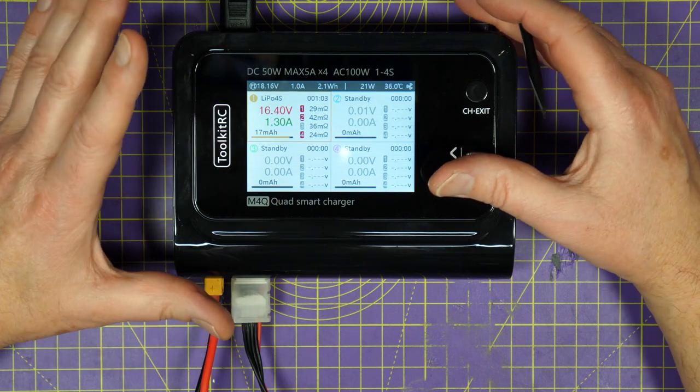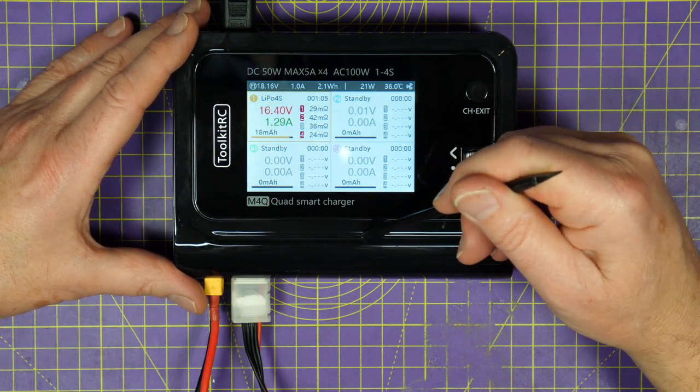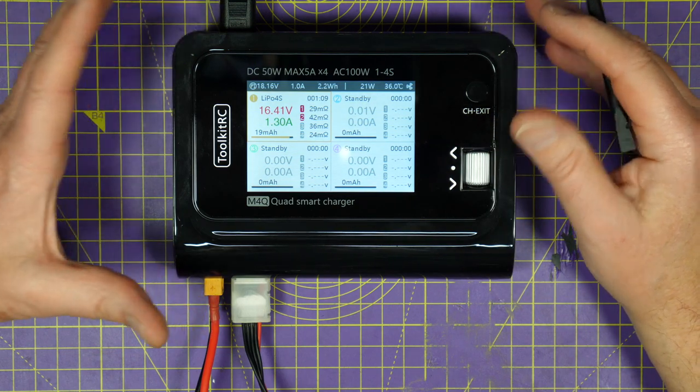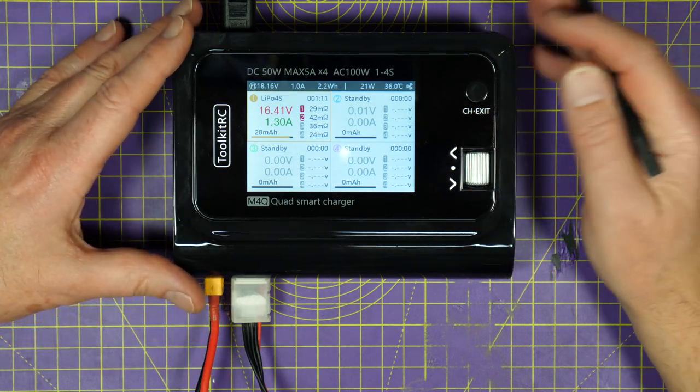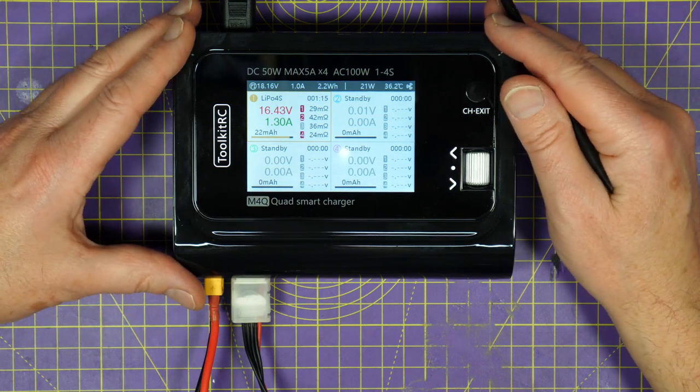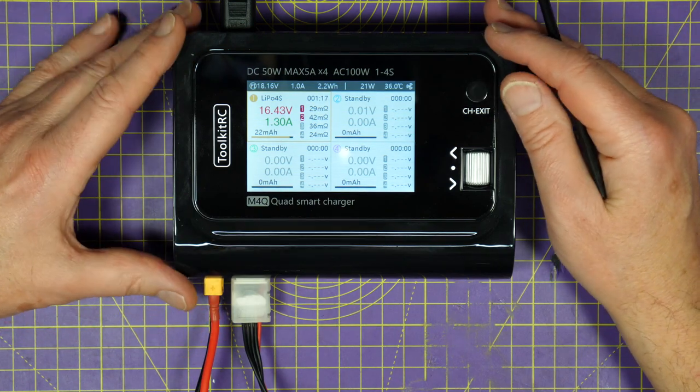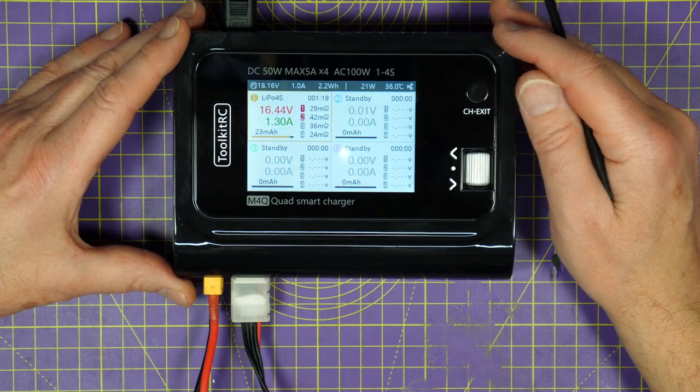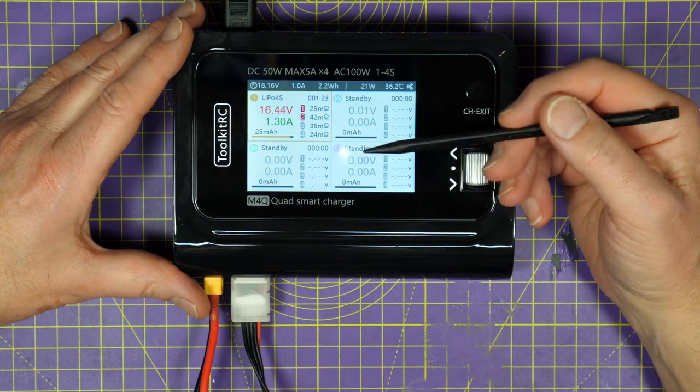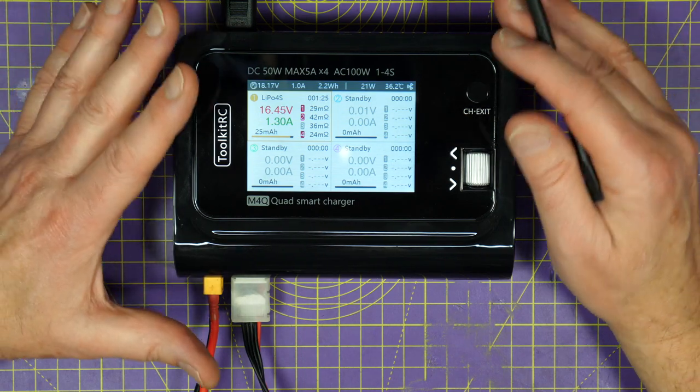And this M4Q is using the same revised balance circuit toolkit RC introduced on the M6D and more recently included on the M6 version 2. And according to the specs, it's accurate to less than 5 millivolts. Now, I've been using this all week and it's been perfect and charges to the correct voltage across each cell. It's fantastic and it's just great value.